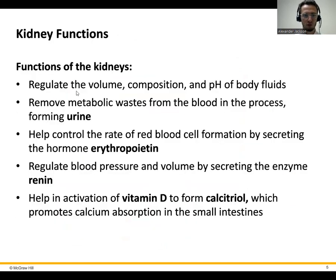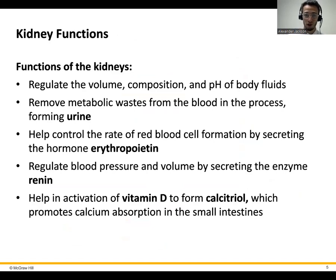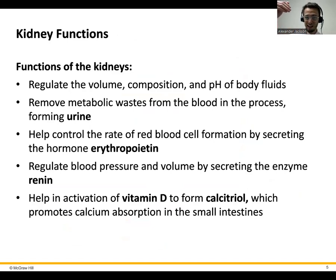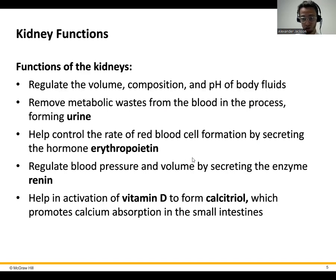Here are some more functions specifically of the kidneys. We'll talk about erythropoietin. If your red blood cell count gets too low — remember, red blood cells carry oxygen to your cells for cell respiration and help carry carbon dioxide out through your lungs — then erythropoietin will be secreted. This is also called EPO, which literally means red blood cell creation.